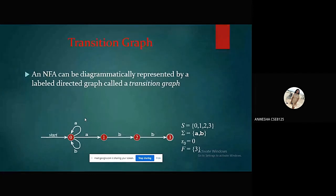Then transition graph. An NFA can be diagrammatically represented by a labeled directed graph called transition graph. Here we have shown one example of a transition graph of NFA. Here 0, 1, 2, and 3 are the states (S). As input states, we have A and B. s₀, the start state is 0, and F is the final state, that is 3.